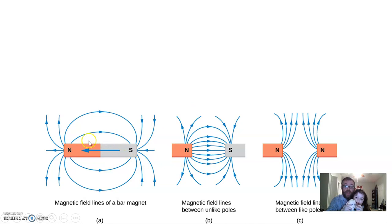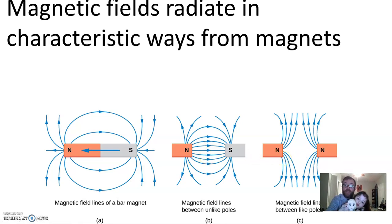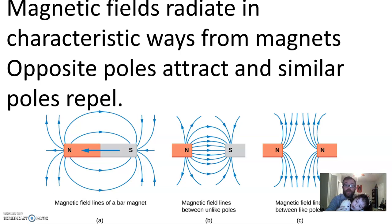You've seen these field lines from magnets between the north and south end. The north and south, the opposites attract, the same repel against each other. You see the direction of these arrows for how the charges are moving along those fields. Magnetic fields radiate in characteristic ways from magnets. Opposite poles attract, and similar poles repel.